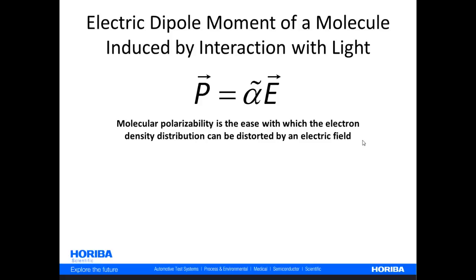Let's begin with the most basic expression in light scattering and electrodynamics: P, the induced dipole moment, which is the product of alpha, the polarizability tensor, times E, the incident electric field. Molecular polarizability is the ease with which the electron density distribution of the molecule through the bonds can be distorted by an electric field.